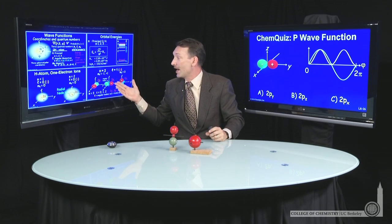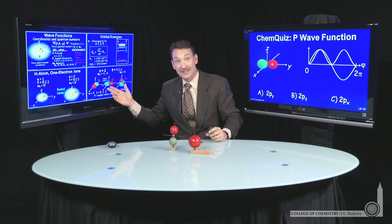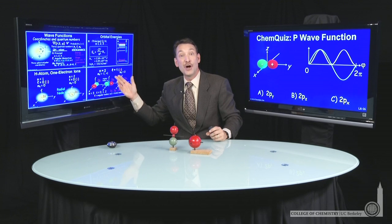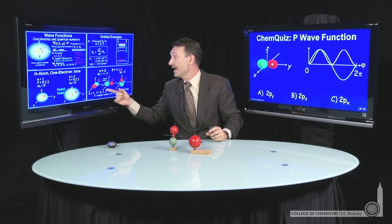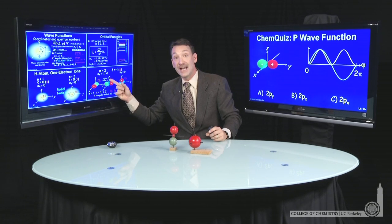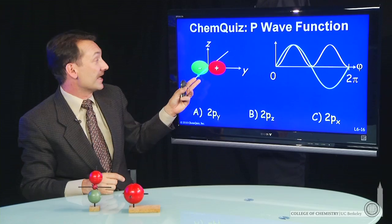If you look at the 2py orbital, the x-axis has an angular node right along the xz plane. So anywhere along the x-axis or the z-axis, the wave function has to be 0. And that's what we have in this case.